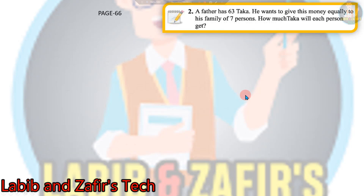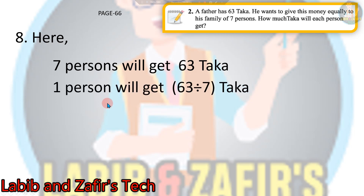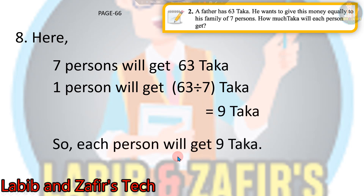Another word problem from page 66: A father has 63 taka. He wants to give his money equally to his family of 7 persons. How much taka will each person get? 7 persons will get 63 taka, so 1 person will get 63 divided by 7, which is 9 taka. So each person will get 9 taka.